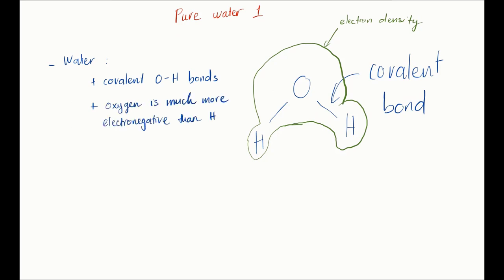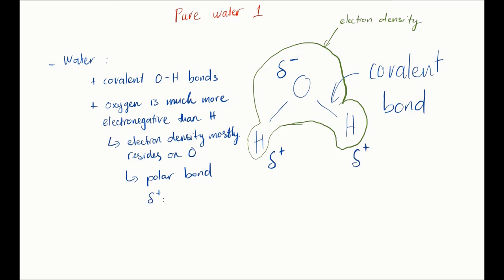This leaves little electron density on the hydrogen. Since oxygen is electron rich and hydrogens are electron poor, we call these kinds of bonds polar bonds because there is not an equal sharing of the electron density, which is what a non-polar bond would have. And we indicate the electron rich region with a delta minus symbol and the electron poor region with a delta plus symbol.